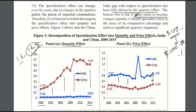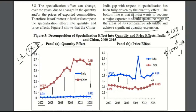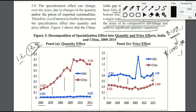So the lesson for the Indian economy is that if India wants to become a major exporter, it should specialize more in areas of its comparative advantage and achieve significant quantity expansion. India needs to identify areas where it has comparative advantage and increase the export quantity in those areas to achieve the level that the Chinese economy has.